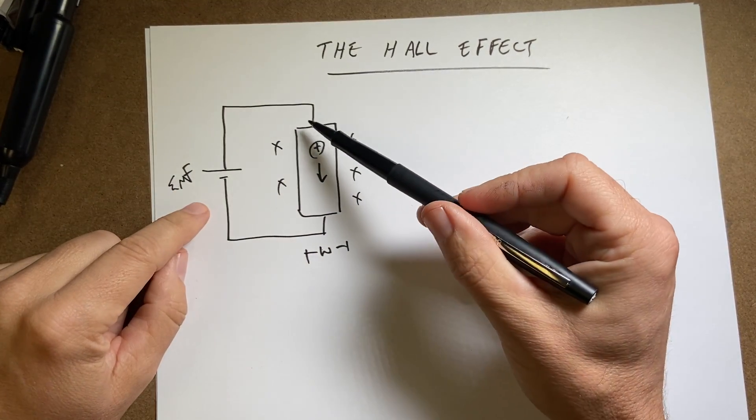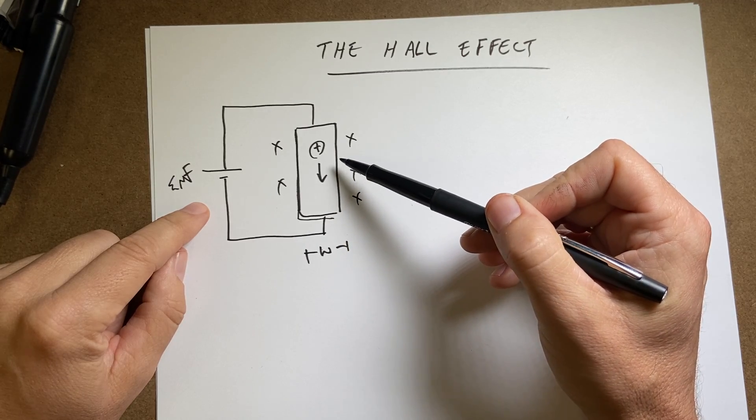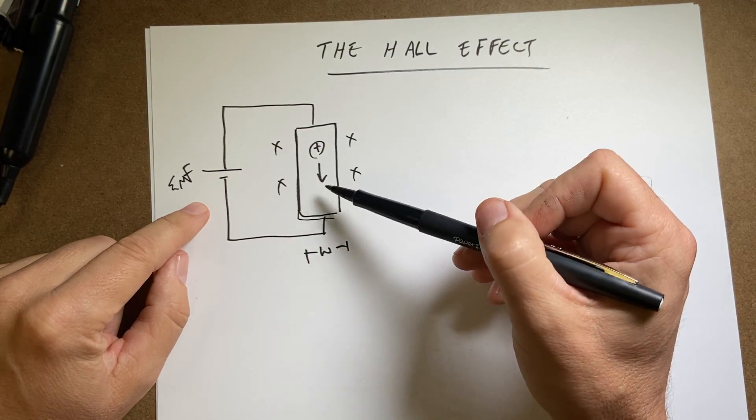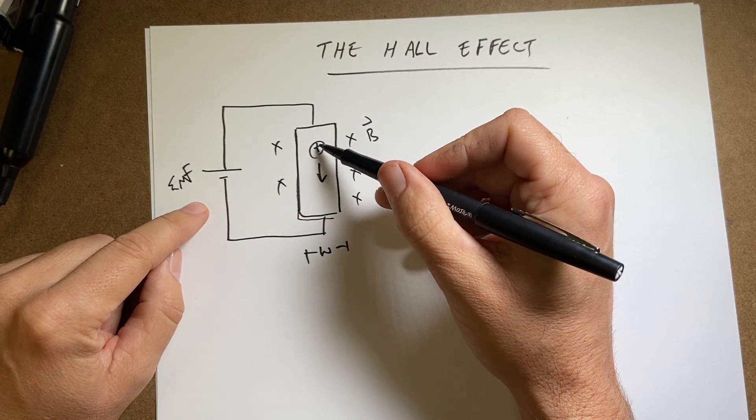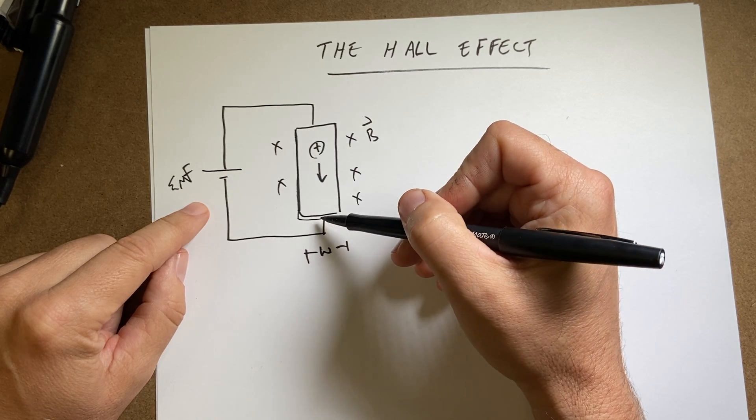So suppose I have this block of metal right here. It's like a rectangular cube, and I'm running some current through it. And it's in a constant magnetic field B. And I don't know anything about the charge, but let's just say there's some charges moving through there and there are positive charges moving in the direction of current.